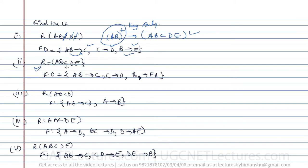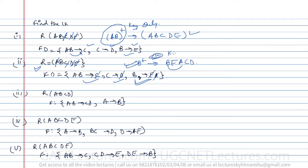Now let us check question two: R(A,B,C,D,E). What is not present on the right-hand side? We have C, D, E, and A present, so only B is not present. Taking the B closure: B identifies B trivially, B→EA, then with AB I can identify C, and with C I can identify D. Therefore B is the candidate key — and the only candidate key — for this relation.